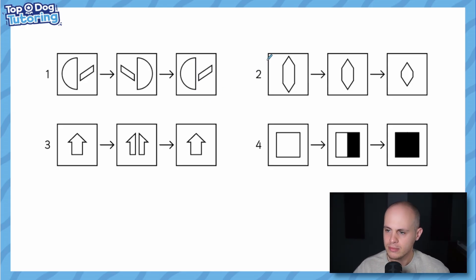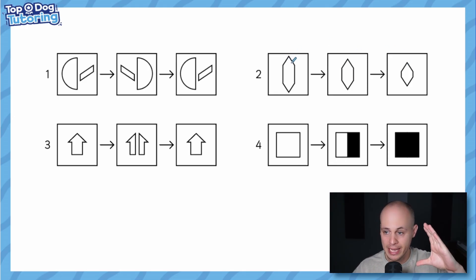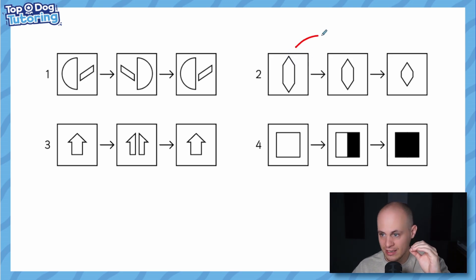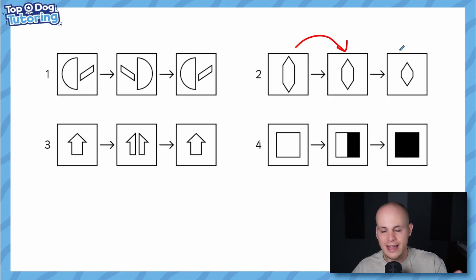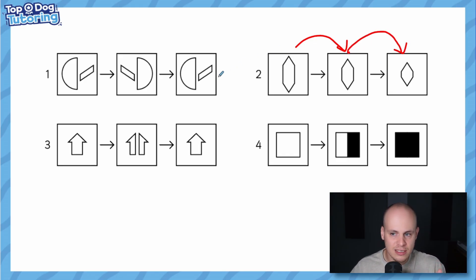Operation two is a bit different. Through the series of images, we can see that operation two represents the shape being squished vertically — it just gets squished this way. Unlike operation one, if we apply this transformation again it doesn't revert back to its original state; it actually squishes it even further. So there's a slight difference between these two types of operation.